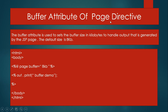The buffer attribute of the page directive is used to set the buffer size in kilobytes to handle the output generated by the JSP page. The default size is 8 KB. In this example, the buffer attribute is passed 8 KB, which is the default size. If you write 16 it does not cause any error, but if you write a very large value like 1 lakh KB, it will display a memory exception error on the screen.